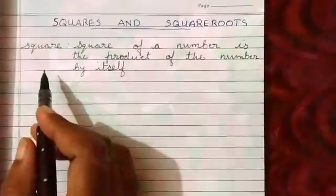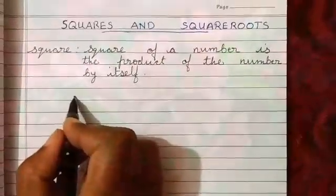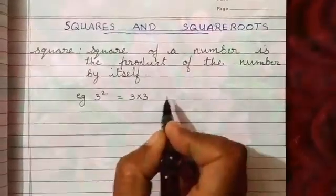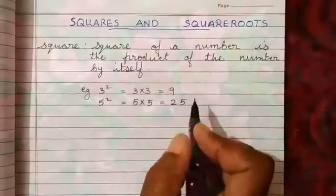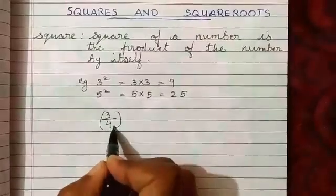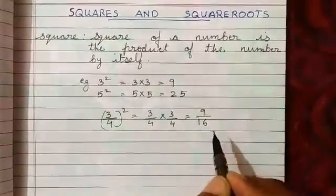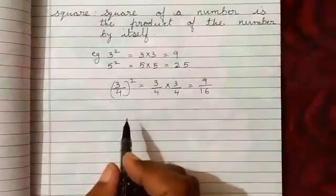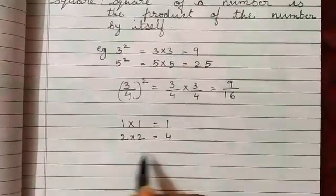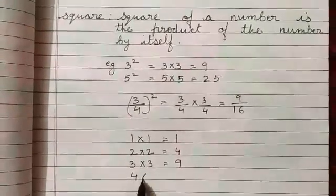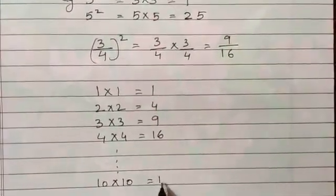Squares and square roots. Let us understand what is a square. The square of a number is a product of the number by itself. For example, 3 squared is equal to 3 × 3 = 9, or 5 squared is equal to 5 × 5 = 25. If you consider a rational number, for example 3/4, then (3/4) squared equals (3/4) × (3/4) = 9/16. Now consider: 1×1=1, 2×2=4, 3×3=9, 4×4=16, 10×10=100, and so on.